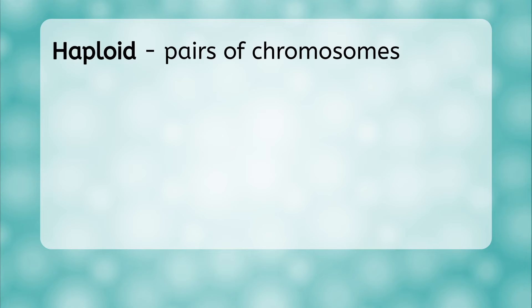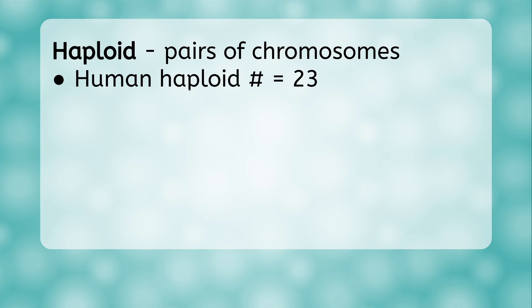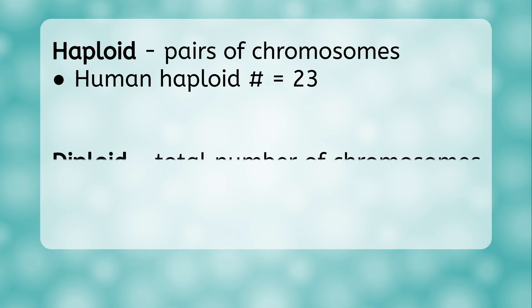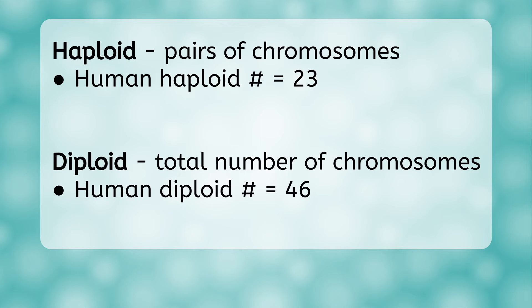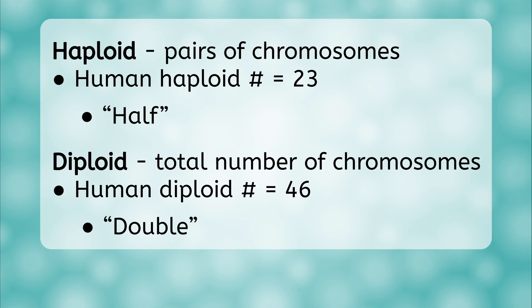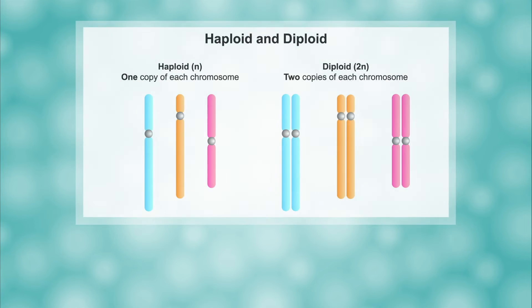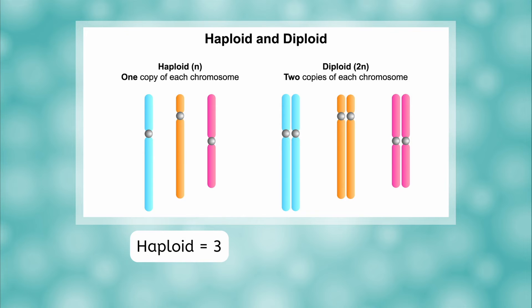Talking about the number of chromosomes can be confusing, because sometimes we say humans have 46 chromosomes and sometimes 23. To avoid confusion, we use the terms haploid and diploid. Haploid refers to the number of pairs of chromosomes, so the human haploid number is 23. Diploid refers to the total number, which is 46 for humans. The easy way to remember this is that haploid starts with the word 'half,' and it's half the total number. Diploid starts with the same letter as 'double,' and is double the number of pairs. In an example with three types of chromosomes, the haploid number is 3 and the diploid number is 6.